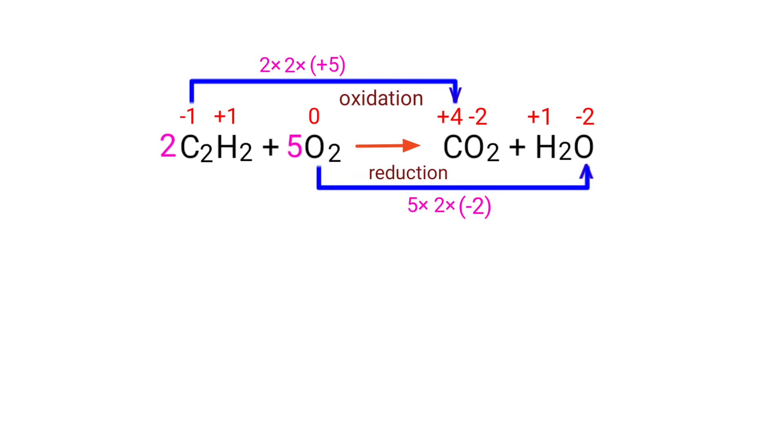Now you can write the equation as 2C2H2 plus 5O2 gives us CO2 plus H2O.